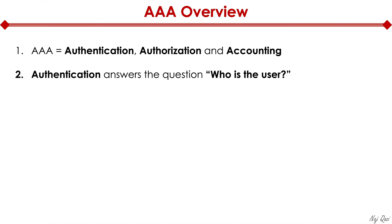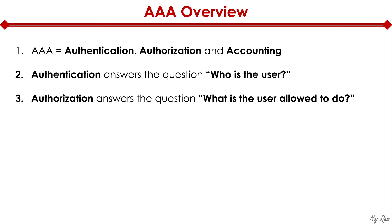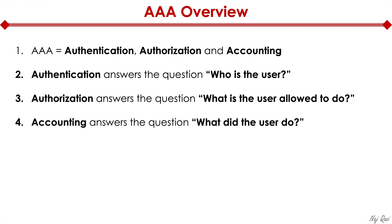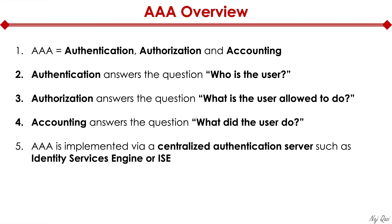Authentication in AAA answers the question: who is the user? Authorization answers the question: what is the user allowed to do? And accounting answers the question: what did the user do?